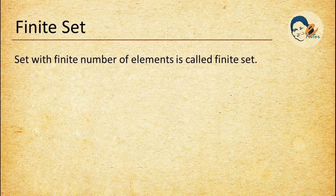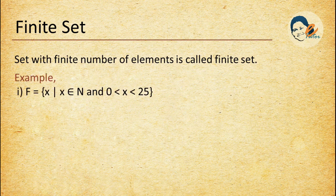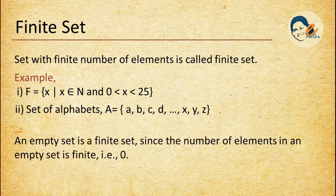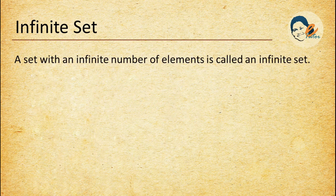Finite set: a set with a finite number of elements is called a finite set. Example: F = {x such that x belongs to N and 0 < x < 25} — this set represents a finite set. Another example: the set of alphabets A = {all the alphabets} is also an example of a finite set. An important concept: an empty set is a finite set, since the number of elements in an empty set is finite, that is 0.